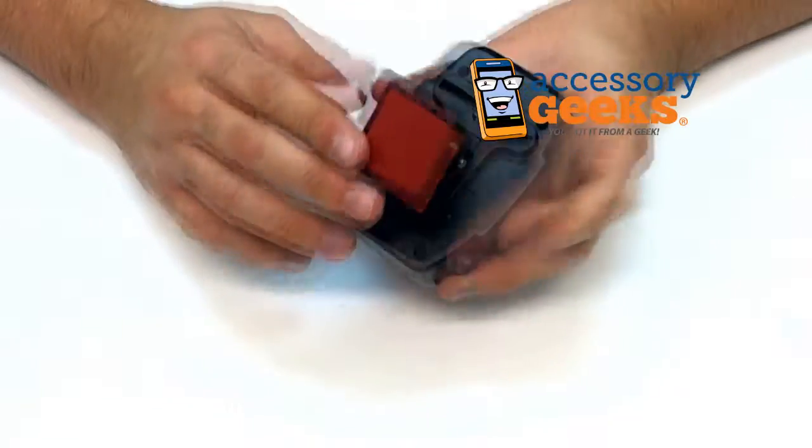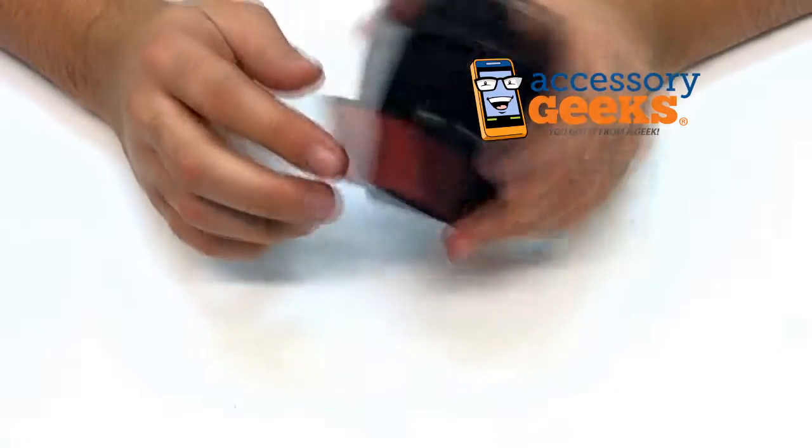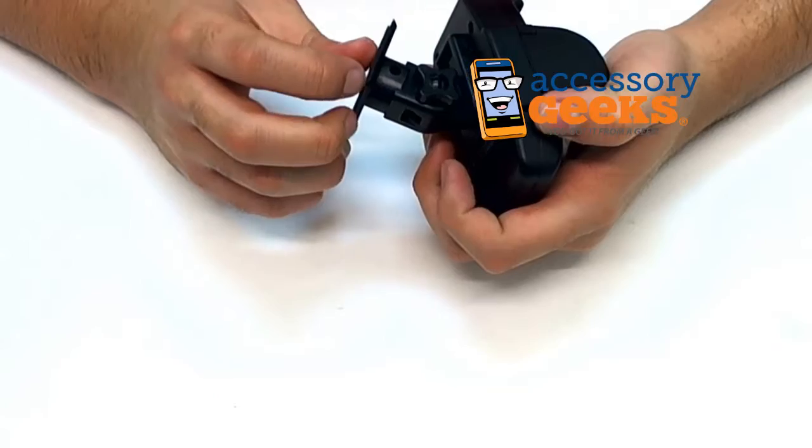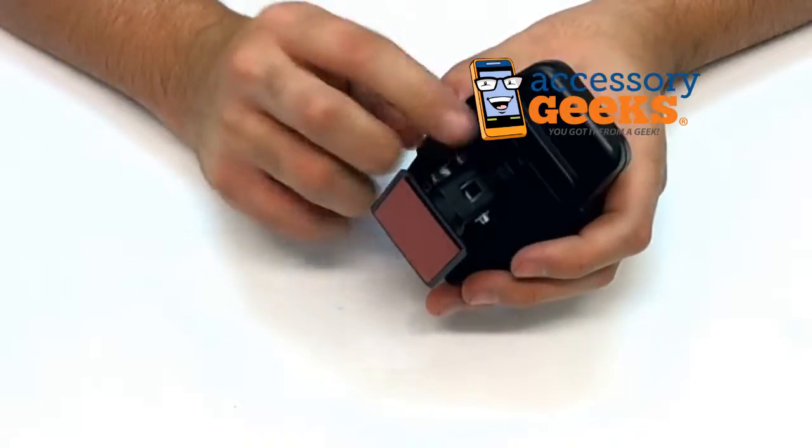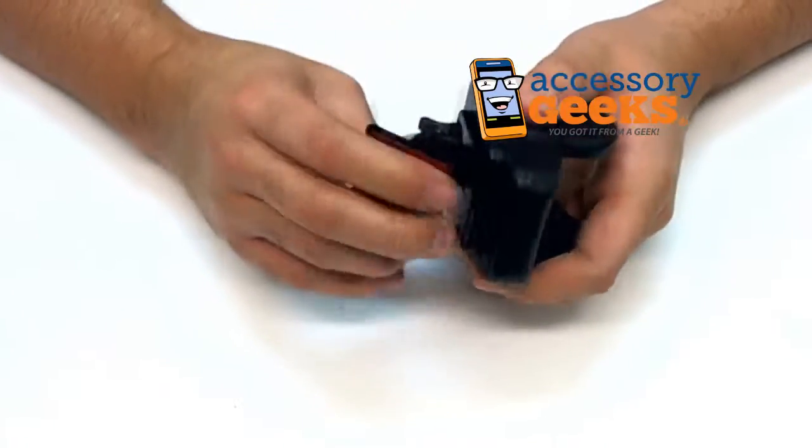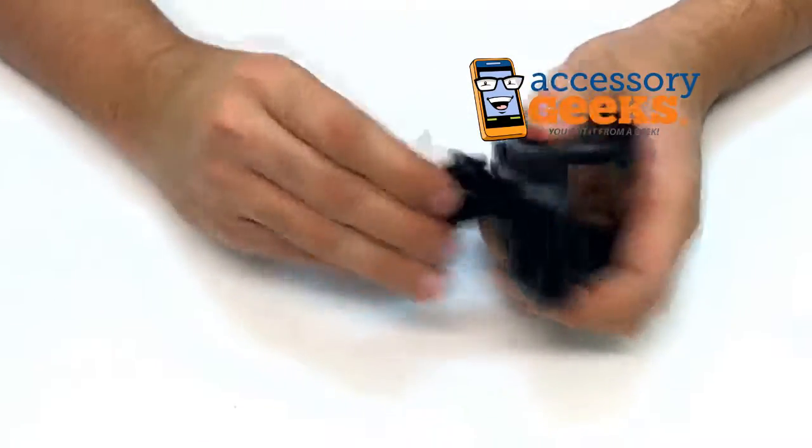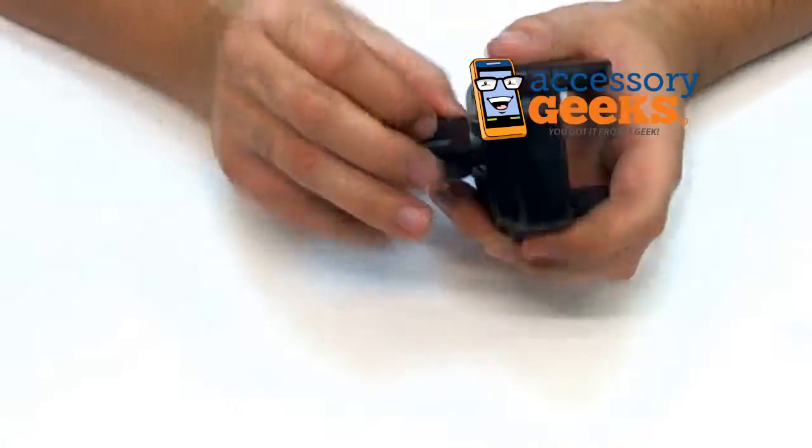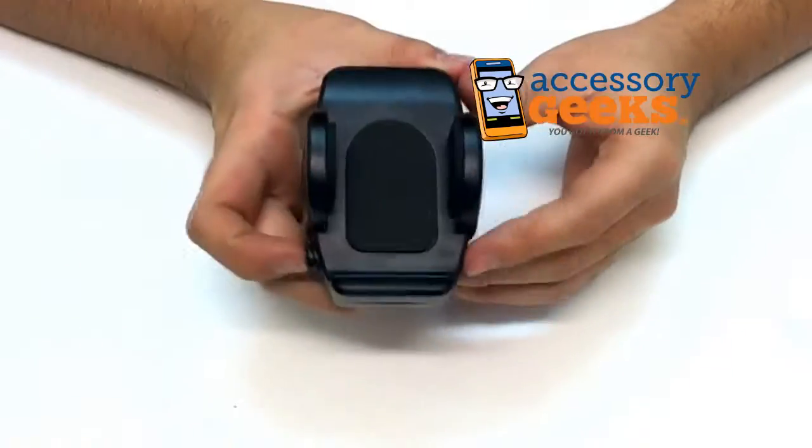This little part sticks on to either your dash or your windshield, and this little leg in the back is actually adjustable up and down. What's really nice about this is that there's a couple really nice things about it.